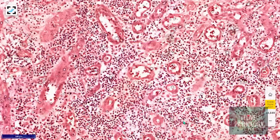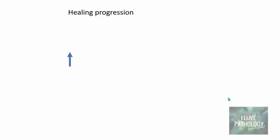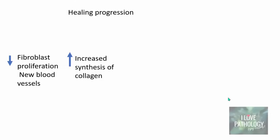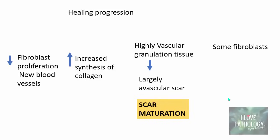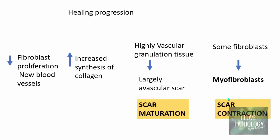During the progression of healing, there is progressively a decrease in fibroblast proliferation, decrease in new blood vessel formation, and an increase in collagen synthesis. This results in conversion of highly vascular granulation tissue to a largely avascular scar — called scar maturation. Additionally, some fibroblasts within the granulation tissue acquire smooth muscle features and transform into myofibroblasts, which help in contraction of the scar.